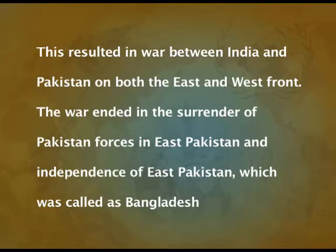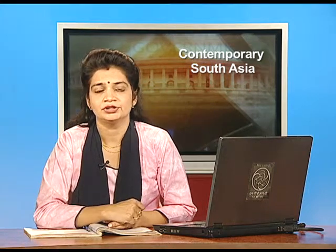After the release of Mujibur Rahman, he assumed the provincial presidency briefly, then took office as Prime Minister of independent Bangladesh. The new constitution of Bangladesh adopted four fundamental principles: nationalism, secularism, democracy, and socialism. Surprisingly, within just a few years, in 1975, Mujibur Rahman got the constitution amended from a parliamentary to a presidential form of government and banned all other parties except his own Awami League, assuming extraordinary powers and suppressing all opposition.